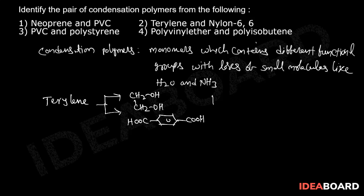These are examples of polyester. The structure of terylene is O-CH2-CH2-O-CO-benzene-CO. Terylene is an example of condensation polymer and polyester. The second one is nylon 6,6.